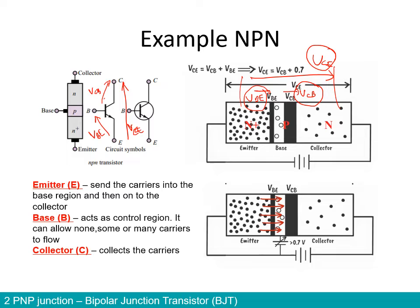One thing we know here is that VBE is the depletion region between the N and P regions — this is the same thing as what we observed in the diode. Therefore, VCE equals VCB plus 0.7 volts, if we consider the semiconductor material is silicon. As for VCB, we don't know the value yet because it will be influenced by something else. This is the equation we have right now.